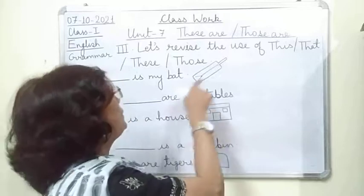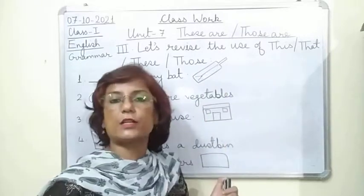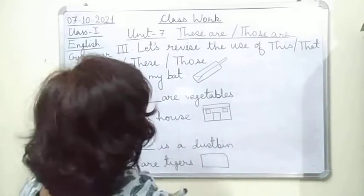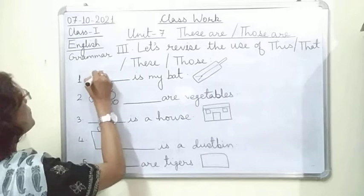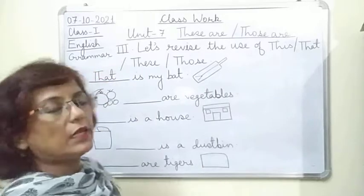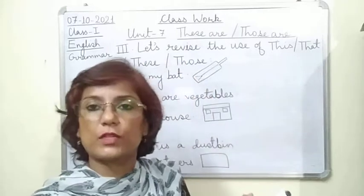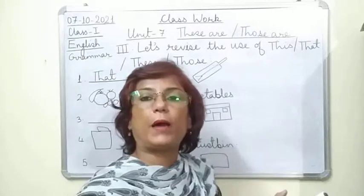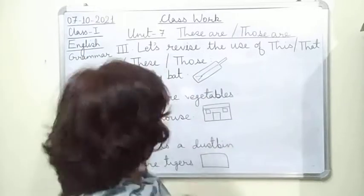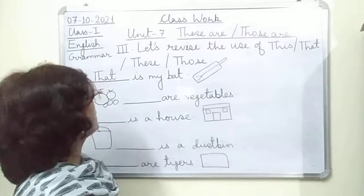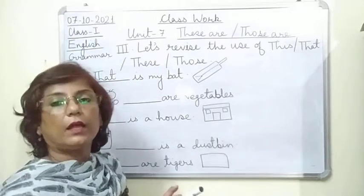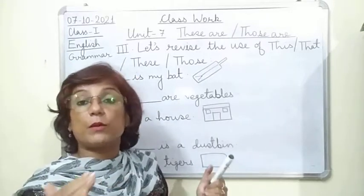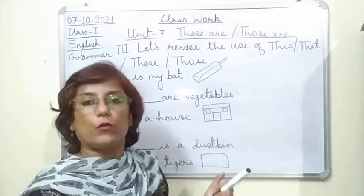The picture is after the sentence. That means it is away from us, so we use 'that'. The answer is: That is my bat.